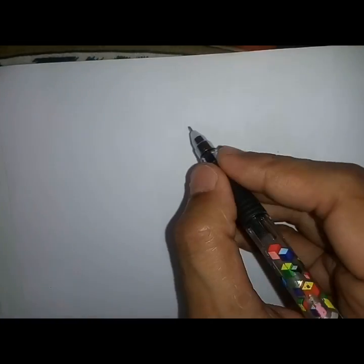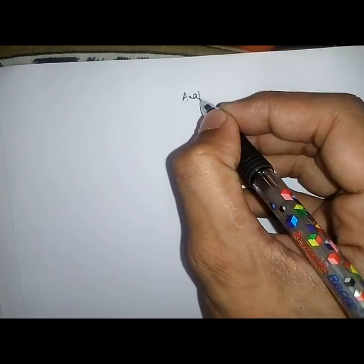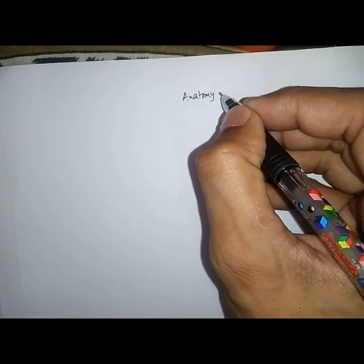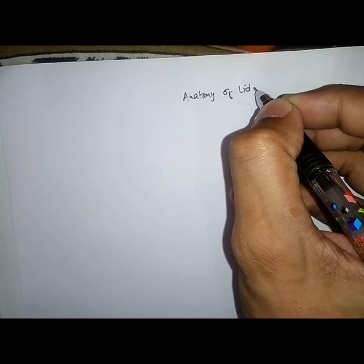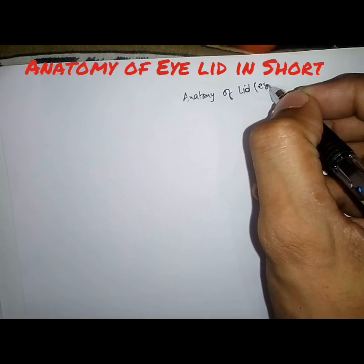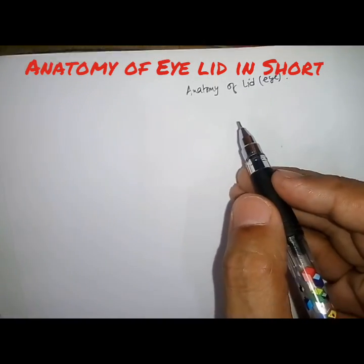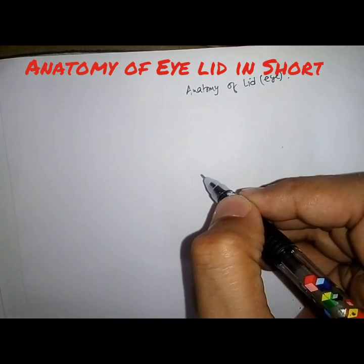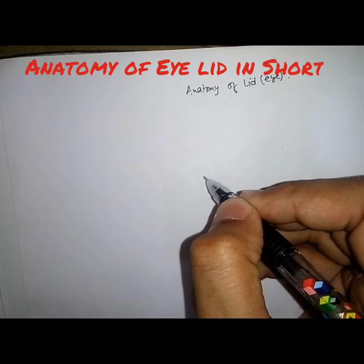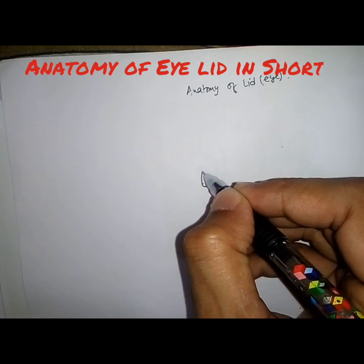The anatomy of the eyelid — that is simply the anatomy of the eyelid. We will discuss the upper eyelid here with the skin.